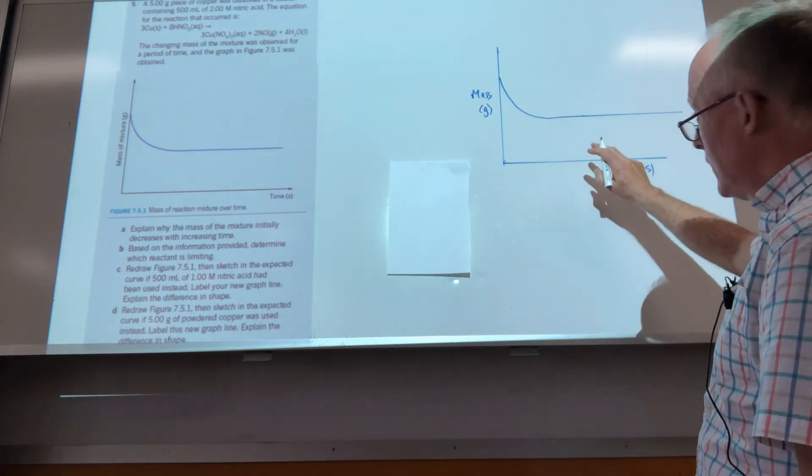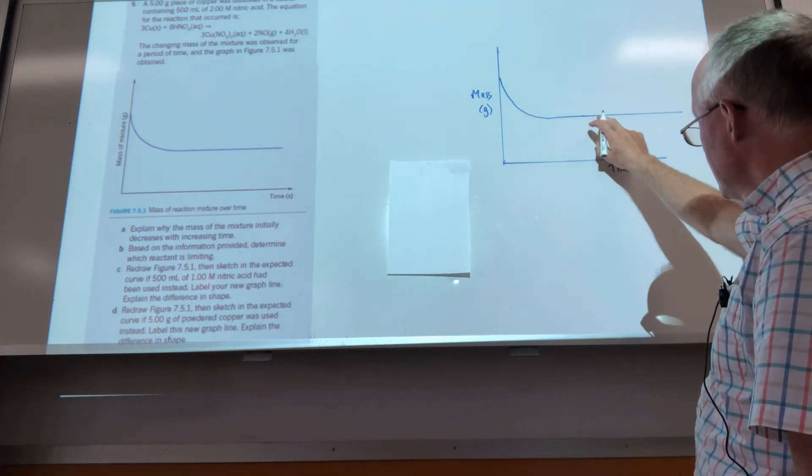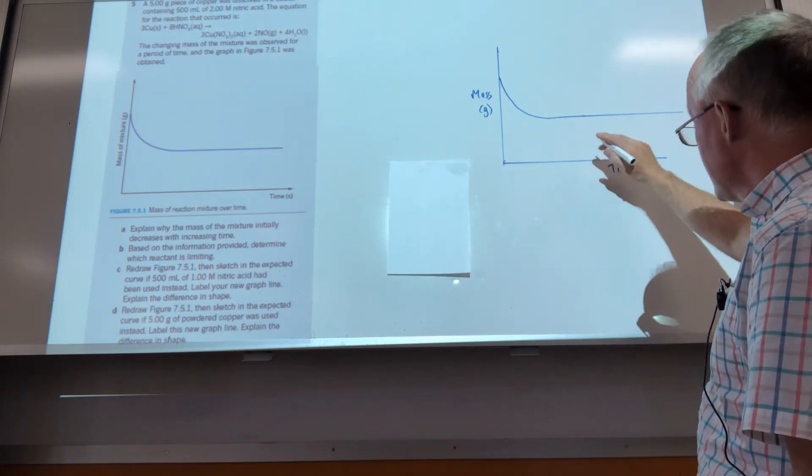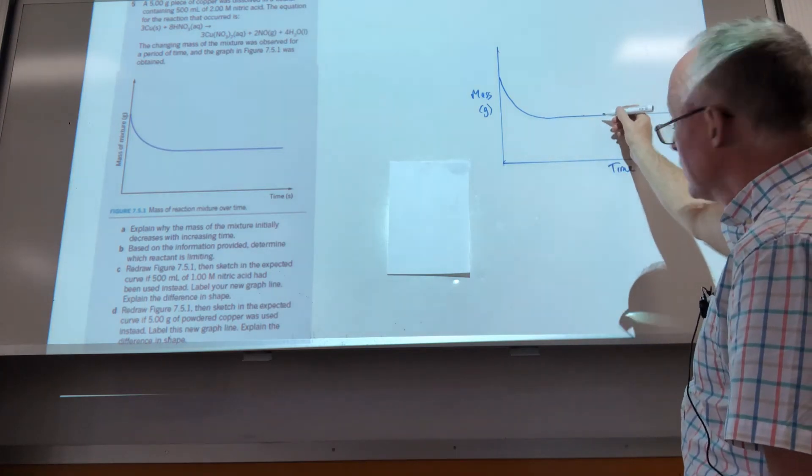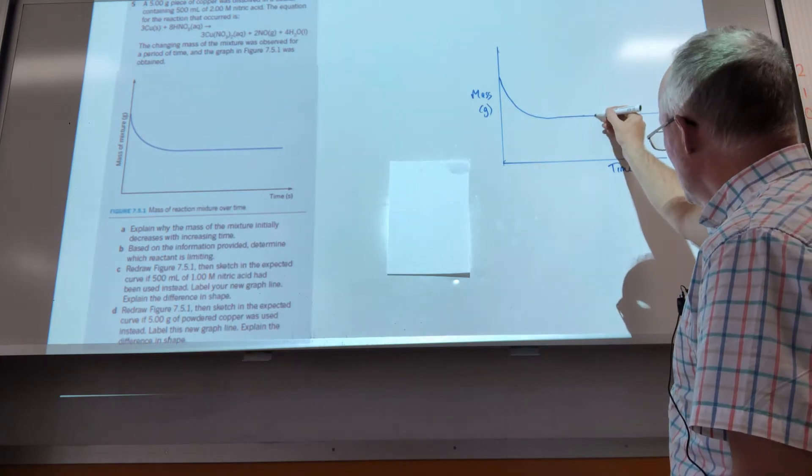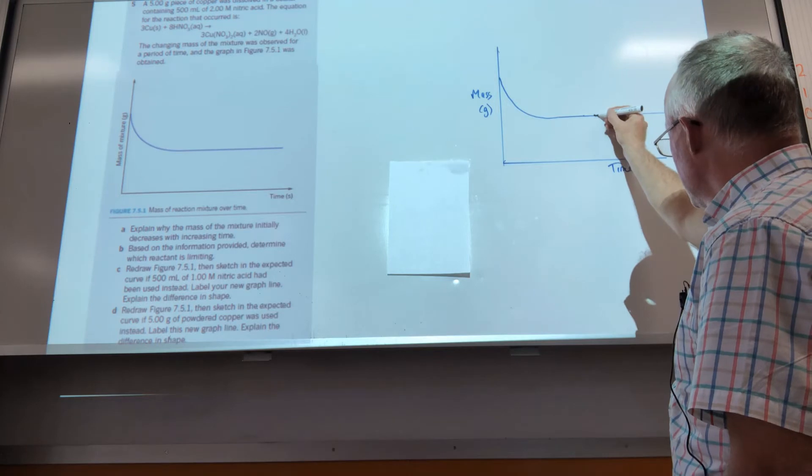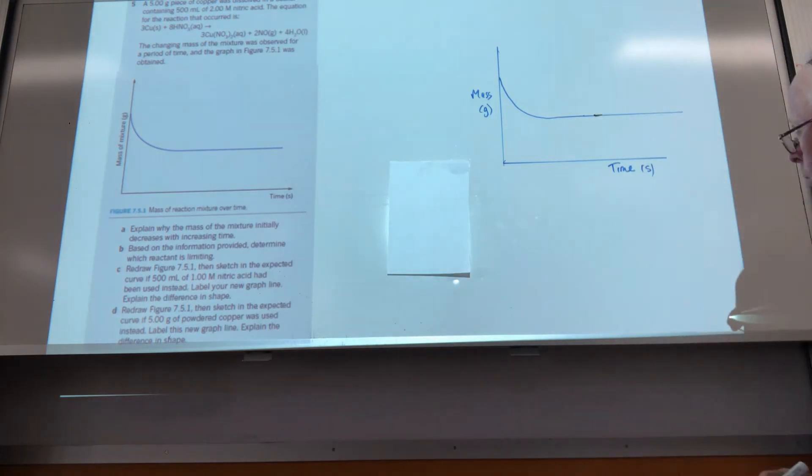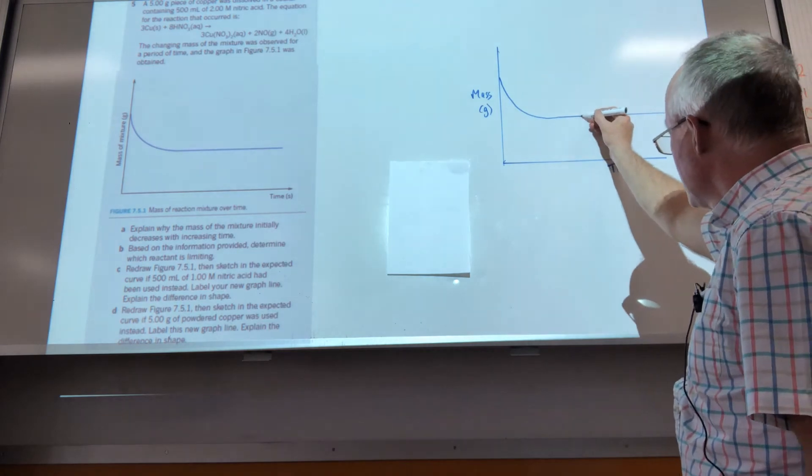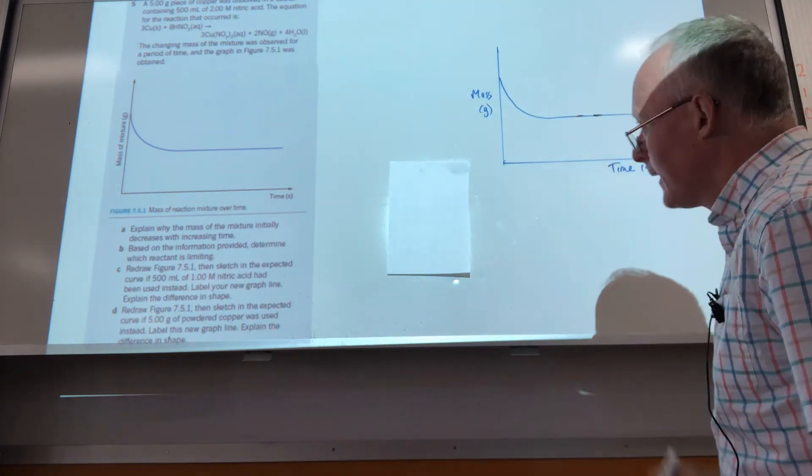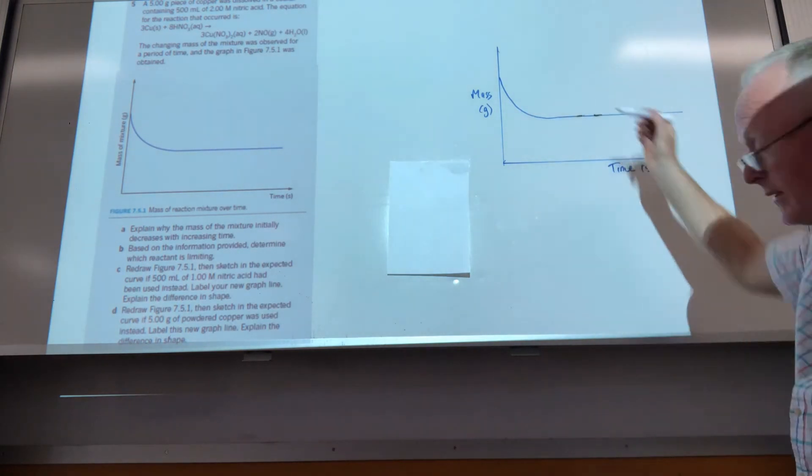Since the mass of copper is limiting and the mass of copper is the same, we're going to end up with the same amount of copper, same amount of decrease in mass. But that point is going to be reached a little bit later on, perhaps here. So I'm marking the point at which I want the lines to meet.